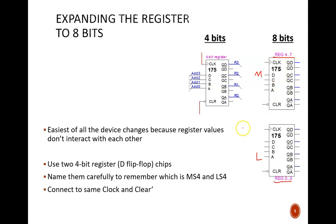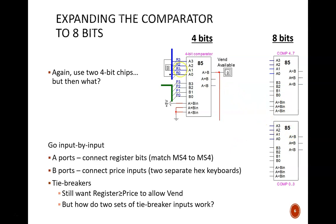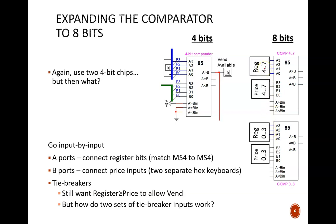Now to expand the comparator. Again, we'll use two of the same 4-bit devices. The register values should feed into the A ports — register bits 0 through 3 feed into the bottom A ports, and register bits 4 through 7 feed into the top A ports. Similarly, the price inputs should feed into the B ports, following the same pattern of least significant 4 bits below and most significant 4 bits up top.